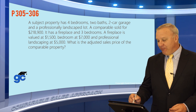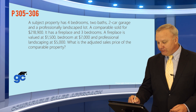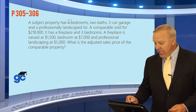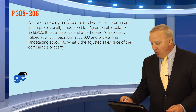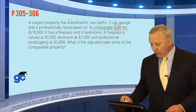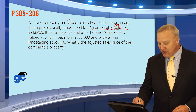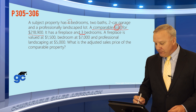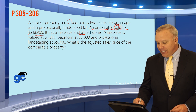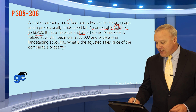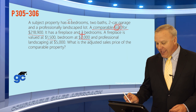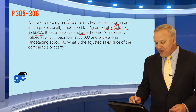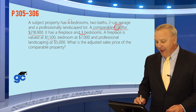Let's take a look at this question. A subject property has four bedrooms and two baths, a two-car garage, and a professionally landscaped lot. A comparable property sold — and that's the key, they've always sold — for $218,900. It has a fireplace and three bedrooms. A fireplace is valued at $1,500, a bedroom at $7,000, and professional landscaping at $5,000. The question is: what is the adjusted sales price of the comparable property?